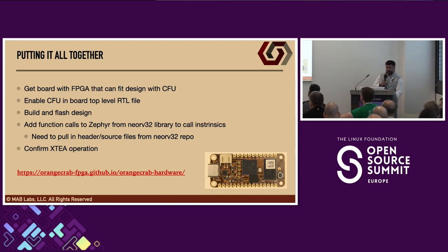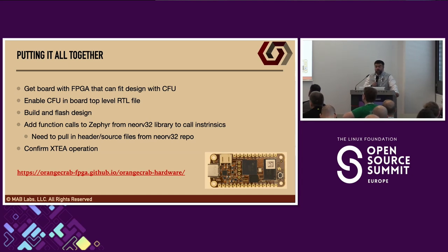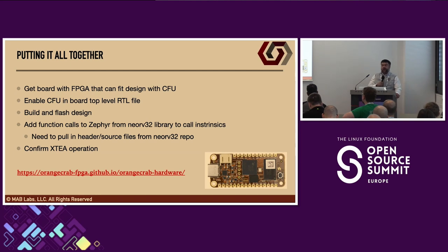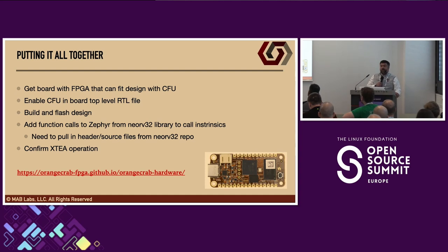Just to demonstrate what I was able to do by implementing this design: because in the last implementation I needed a bigger FPGA that could fit the design with the CFU, I got an Orange Crab FPGA board. It has a bigger FPGA than the one I used last time, which allowed me to fit the design with the CFU implementation. I enabled the CFU in the board top-level RTL file, built and flashed the design, and incorporated the CFU functionality within Zephyr — loading an application with a simple thread implementing the interaction with the FPGA to exercise the XTEA block cipher and print out the results.